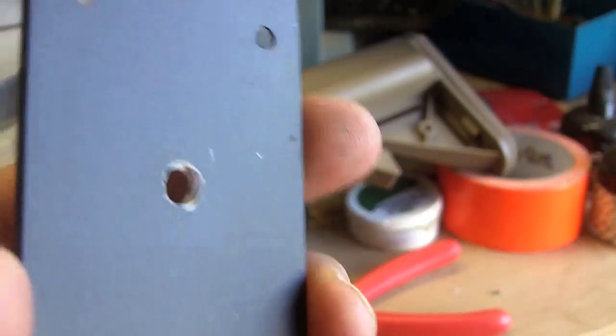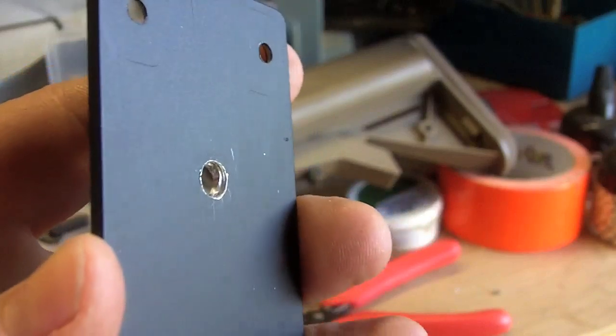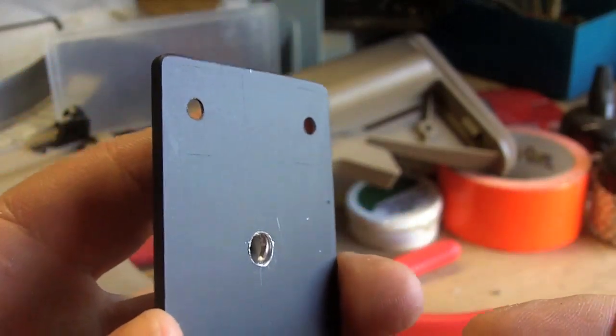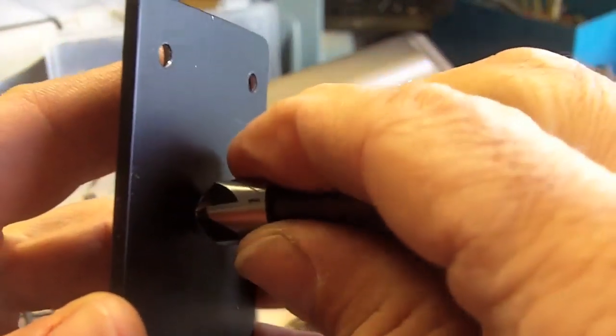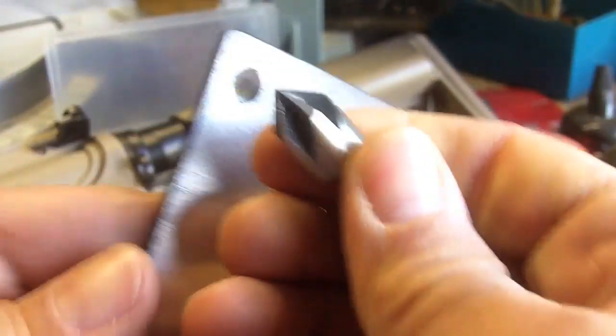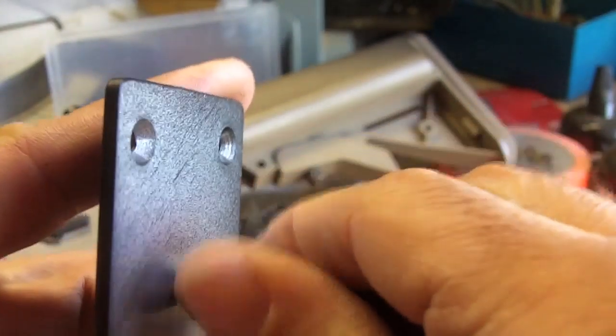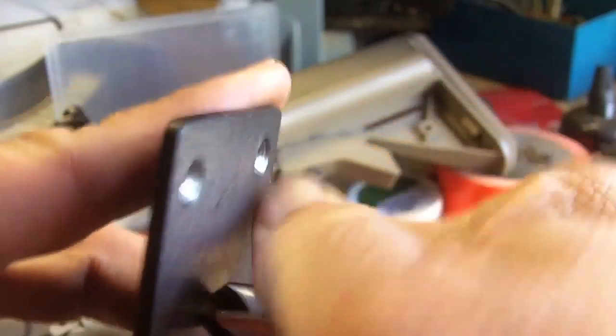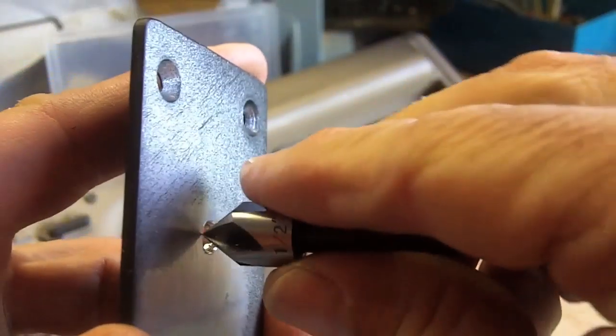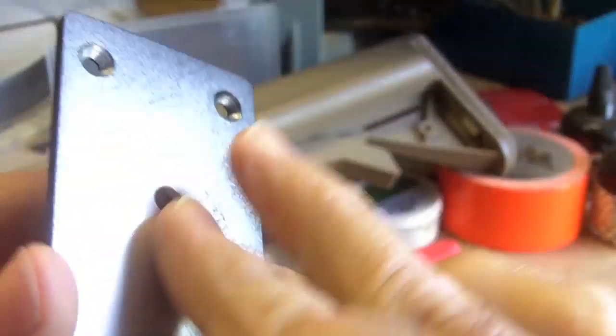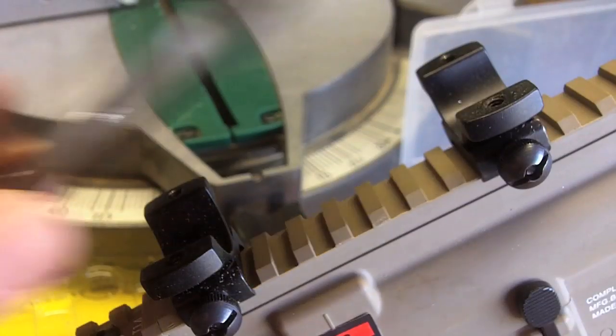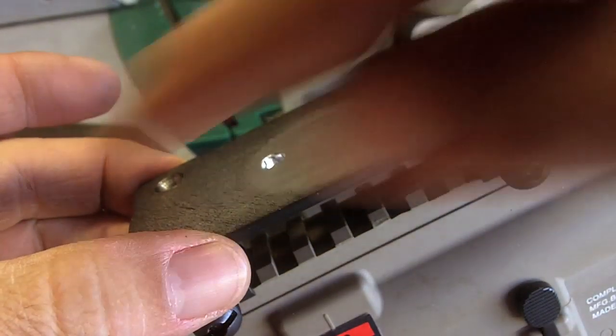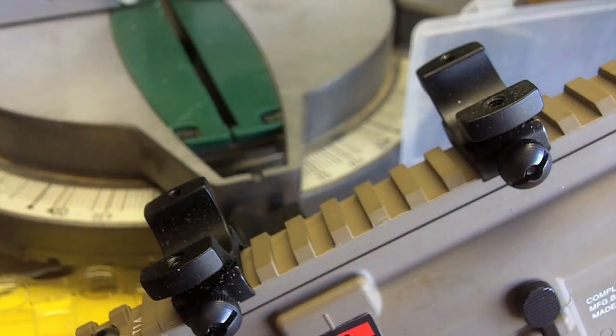The hole isn't real clean where it came out, so I'm just going to take the countersink bit. I'm just going to do this by hand and take some of those edges off of there. Alright, so I'm going to mount the plate on here and then I'm going to paint the top.